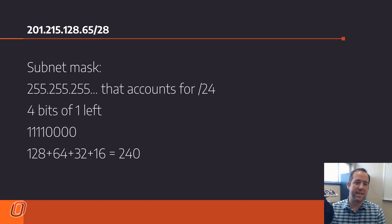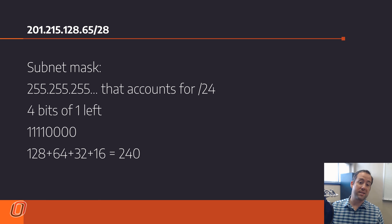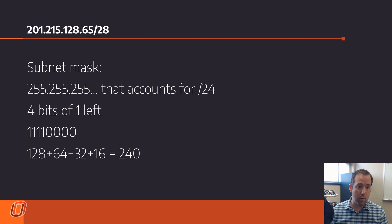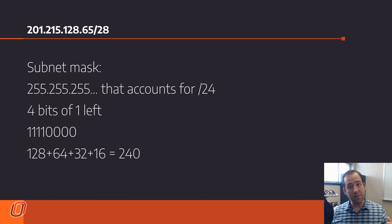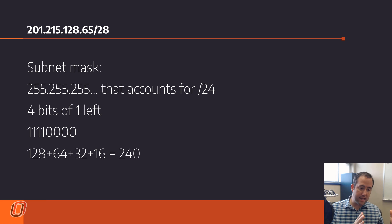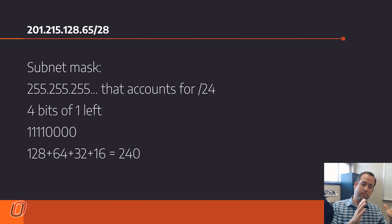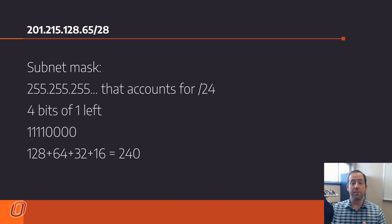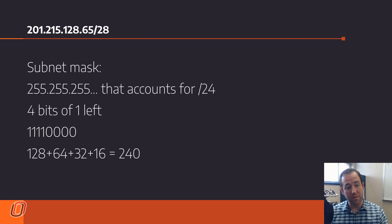Let's do an example: 201.215.128.65/28. If it were slash 24 it would be 255.255.255.0, but it's slash 28, so we have to figure out what that last octet is. 255.255.255 accounts for the first three numbers — that's slash 24 — leaving four bits. So the last number is 11110000 in binary, which is 128 plus 64 plus 32 plus 16 — that is 240. So our subnet mask is 255.255.255.240.